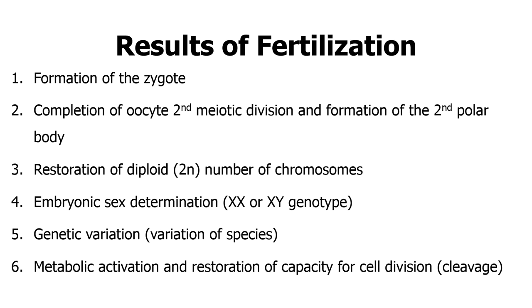Because of crossover during meiosis, you usually have genetic variability, which allows the betterment of the offspring. Genetic variability prevents the passing on of genetic diseases — things that can be preserved within family lines — and allows you to improve the next generation. Once the zygote is formed, it immediately starts to divide because of metabolic activation and restoration of the capacity for cell division, what we call cleavage.